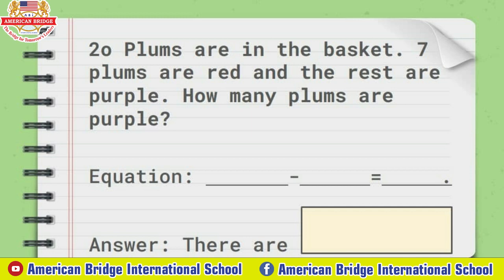So now teacher will explain. In the basket — so here is our basket, everyone — we use a basket to put everything inside it, to make it look good and prepared. So in the basket, we have 20 plants, and seven plants are red. Seven are red and the rest are purple, and we don't know how many plants are purple. Our question is: how many plants are purple? So we will do the subtraction of plants.